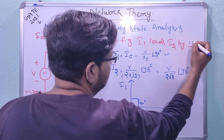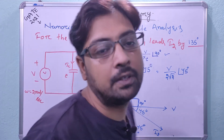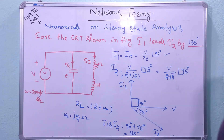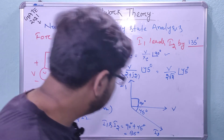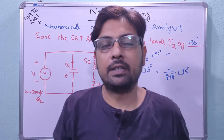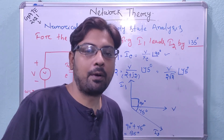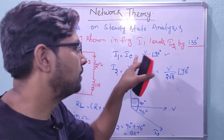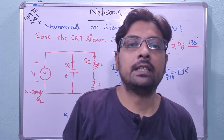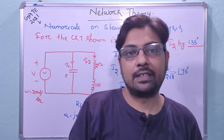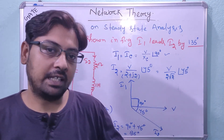The answer is: i1 leads i2 by 135°. This is another GATE level question. This completes the numericals on steady state analysis solved in this session. For more problem-solving questions, follow the Telegram link in the description. I will also start an electrical machines chapter on transformers, so subscribe to the channel for more videos.